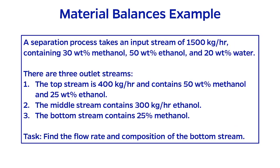So let's look at an example. Let's say we have a separation process that takes an input stream of 1,500 kg per hour and it contains 30 weight percent methanol, 50 percent ethanol, and 20 weight percent water. There are three outlet streams. The top stream is 400 kg per hour and contains 50 percent methanol and 25 percent ethanol. The middle stream contains 300 kg per hour of ethanol. The bottom stream contains 25 percent methanol.